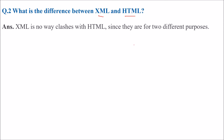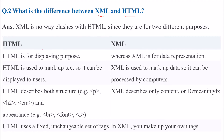XML has no clash with HTML. They are for different purposes because HTML is for display purposes while XML is for data representation. HTML is used to mark up text so it can be displayed to users, the same way you write in Microsoft Word. XML is used to mark up data so that it can be processed by computers. HTML describes both structure like paragraphs and headings, and appearances like HR, BR, font, italic, bold, etc., while XML describes only content.